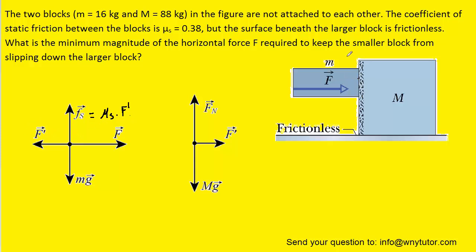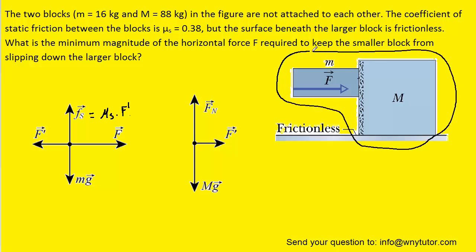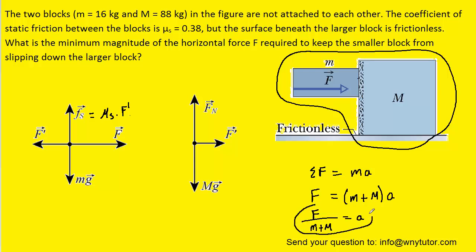Next, we apply Newton's second law to both blocks together, treating them as a single system. Since the surface is frictionless, the only force causing acceleration on the system is the applied force F. So we replace the sum of forces with F, and the total mass is the combined mass of the small block m and the large block M. Solving for acceleration gives us a = F divided by (m + M), a result we will refer to shortly.